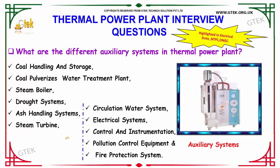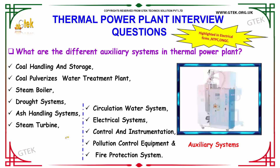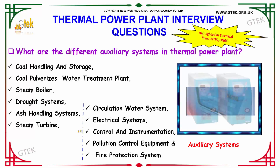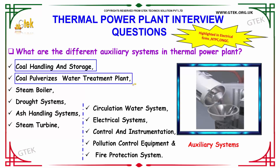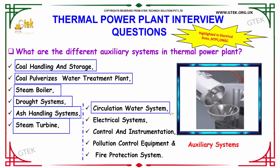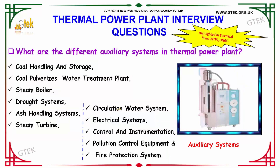What are the different auxiliary systems in a thermal power plant? The different auxiliary systems are: coal handling and storage, coal pulverizers, water treatment plant, steam boiler, draught systems, ash handling systems, steam turbine, circulating water system, electrical systems, control and instrumentation, pollution control equipment, and fire protection systems.